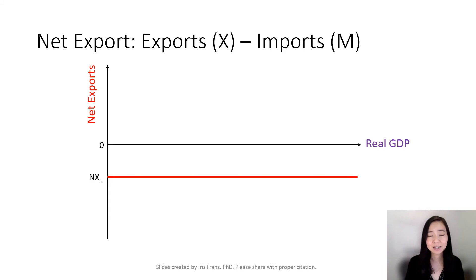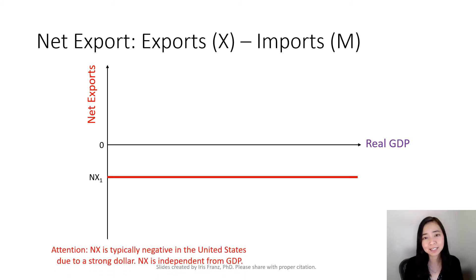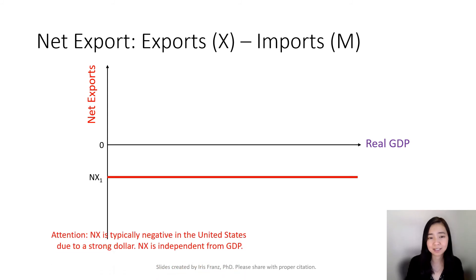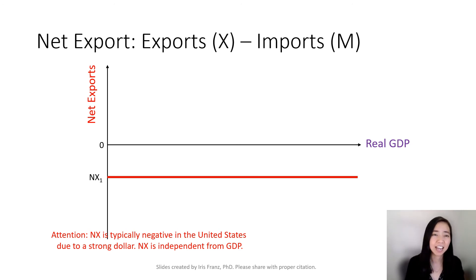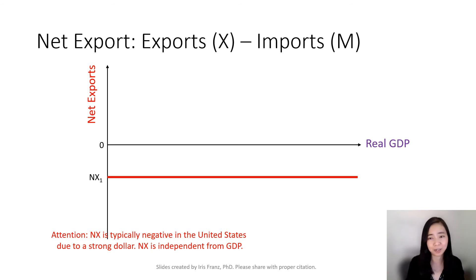And net export is also independent of the real GDP. And typically, the US has a negative net export due partially to our strong dollar. And why is the dollar so strong? We're going to talk about that later when we get a chance.